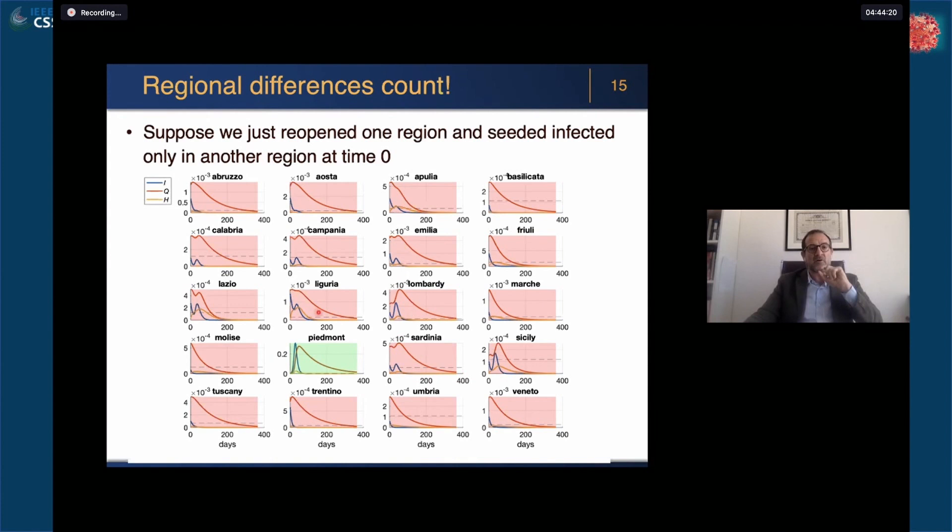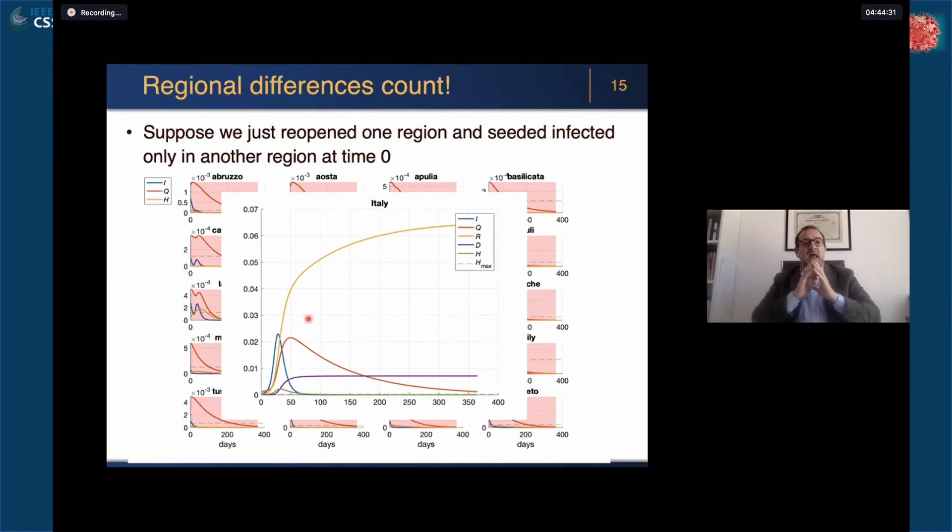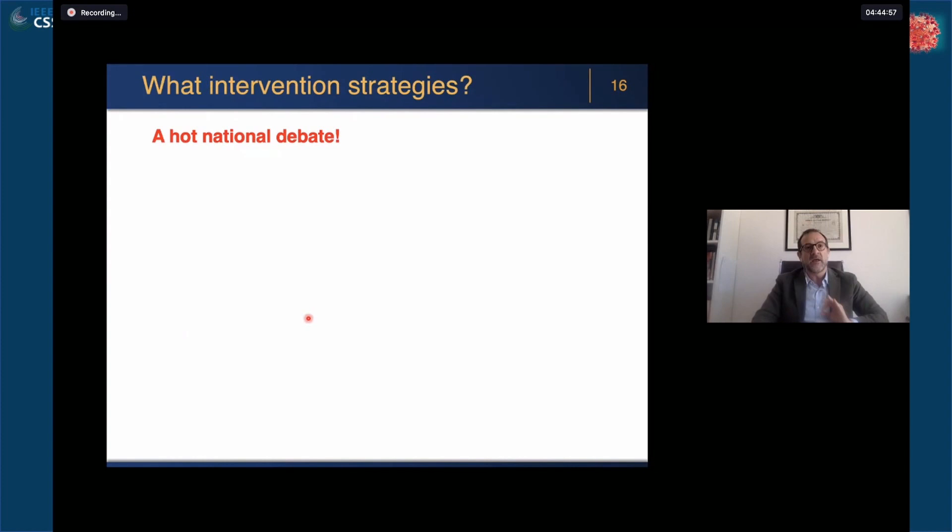This causes the reopening of just one region, of course an outbreak at the national level. The numbers on the axis are percentages of the population, but at this stage, because this is a preliminary investigation, I don't want to spend too much time on giving any quantitative supposition, just qualitative at this time.